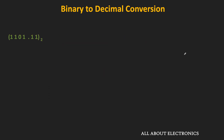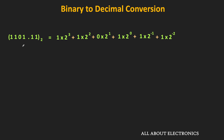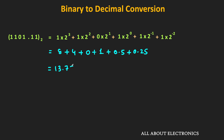Similarly, you can pause the video and convert the given binary number into the decimal equivalent. The weightage of each bit from the binary point increases by a factor of 2 to the left and reduces by a factor of 2 to the right. Taking the summation of all products: 8 + 4 + 0 + 1 + 0.5 + 0.25 = 13.75.